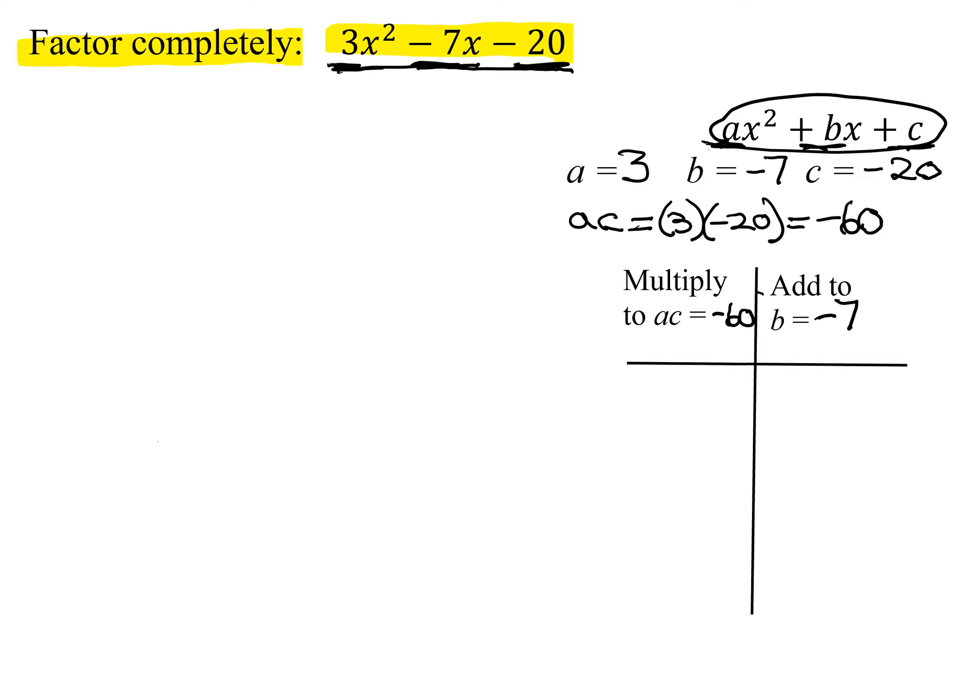So remember, I need two numbers that multiply to a negative and add to a negative. If they multiply to a negative, the signs are different, but if they add to a negative, it means the bigger number has to be the negative one. So I start out with one and the number, and since the bigger number I want is to be negative, I'm going to start with one and negative 60. They definitely multiply to negative 60, and what is one added to a negative 60? It is negative 59. Is that what I'm looking for? No.